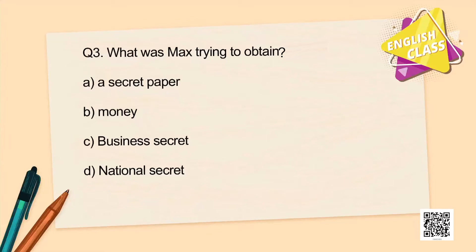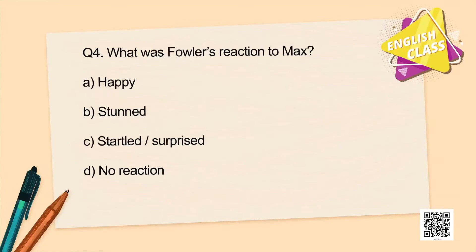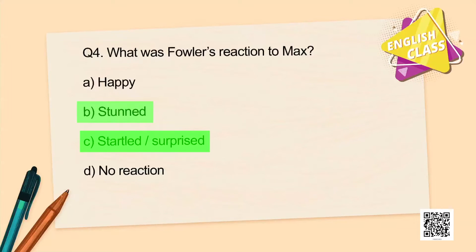Was Max trying to obtain a secret paper, money, some business secret, or a national secret? Some of you may have marked 'a secret paper' — correct. Some may have marked 'a national secret' — also correct, as if we read between the lines, Ausable was a spy and spies work for a country. Question number four: What was Fowler's reaction to Max — happy, stunned, startled, or no reaction at all? Fowler was surprised. 'Stunned' is also correct because the chapter says he was pale — pale-faced when too shocked or surprised.